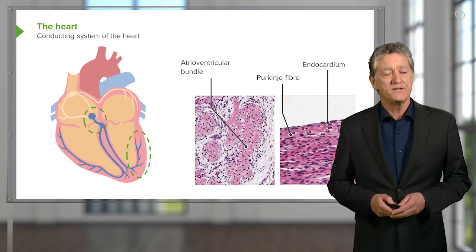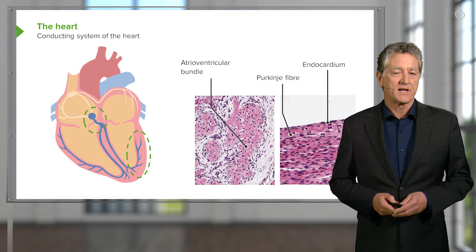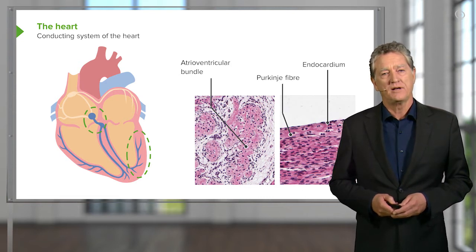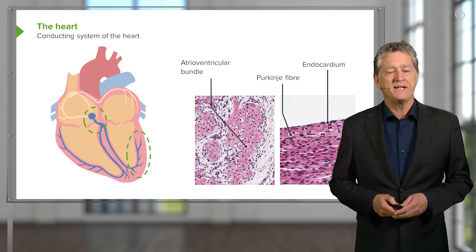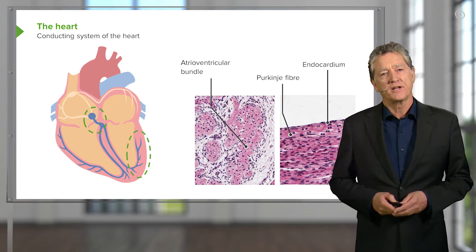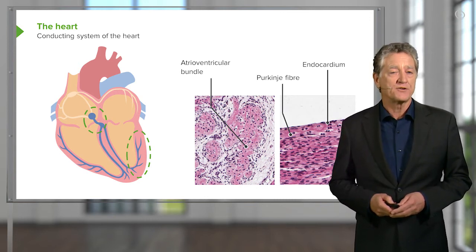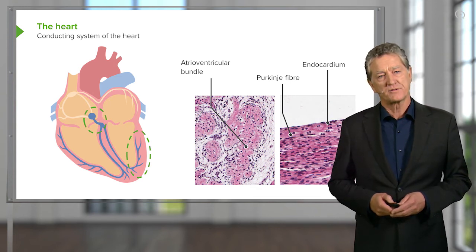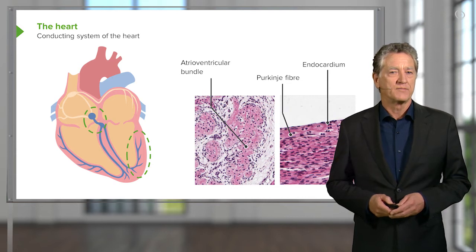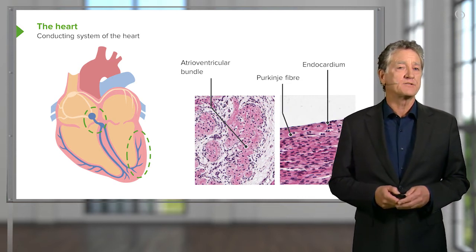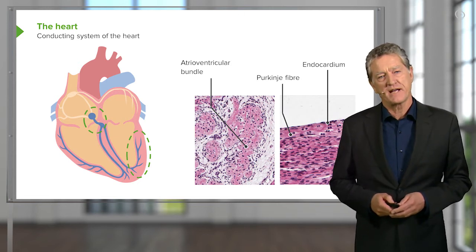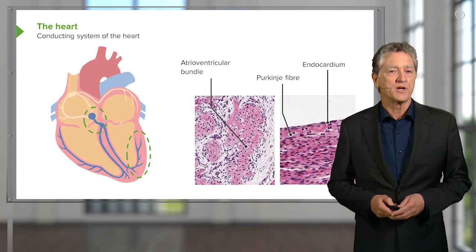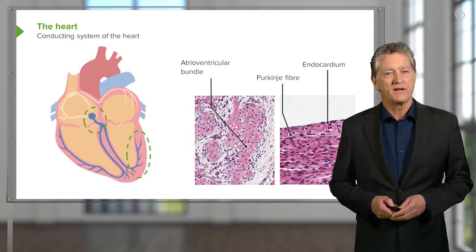The sinoatrial node is the pacemaker of the heart. Cardiac muscle, when it developed, acquired an inherent ability to contract. It contracts without any stimulation, except the impulses emanating from the sinoatrial node. However, that sinoatrial node can be influenced by the autonomic nervous system. The firing rate of the impulse can be increased or decreased by external factors, not just nerves from the autonomic nervous system, but by other factors as well.